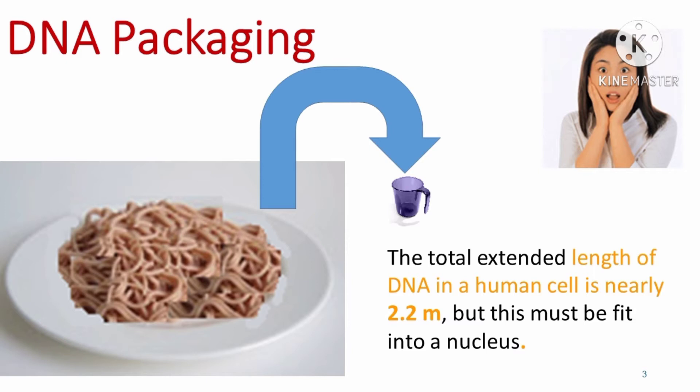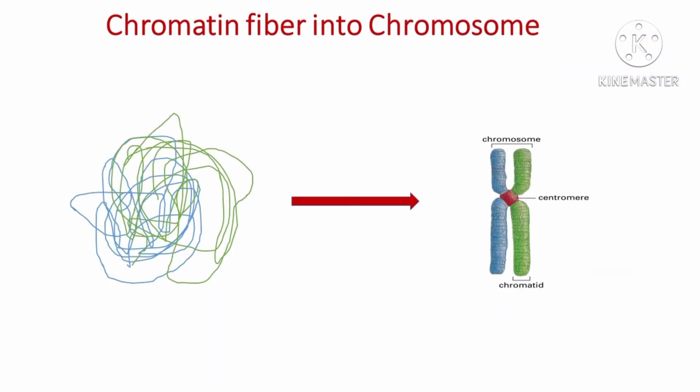Chromosomes are composed of thin chromatin threads called chromatin fibers. These chromatin fibers undergo folding, coiling, and supercoiling to form chromosomes which are far more thicker and smaller than the chromatin fibers.